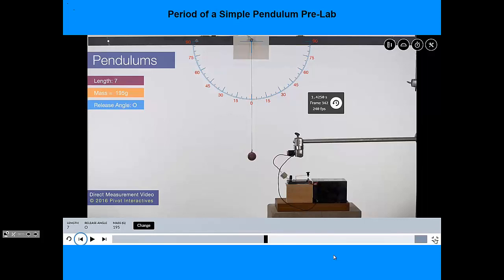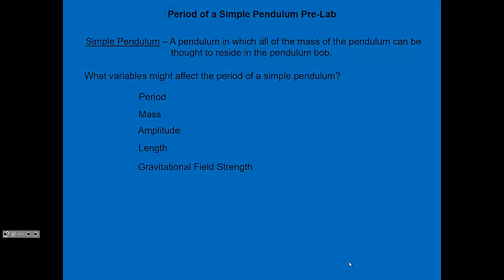So we'll see this in the post lab when we do the proof. But amplitude is going to cancel out. So that means we can take it right out of our list. This shortens the lab significantly. As you saw in the pivot, we can control mass. We can control length. We're going to keep gravitational field strength constant because all the videos were done here on Earth.